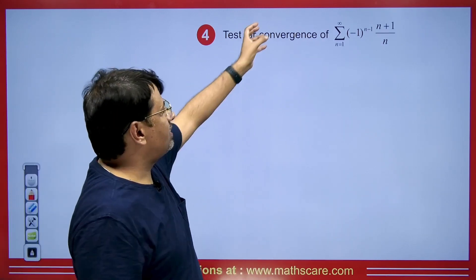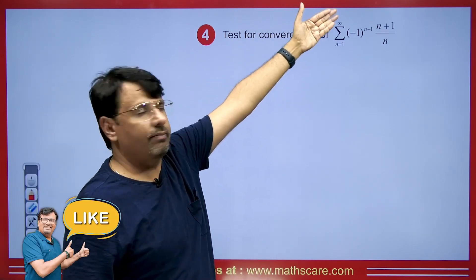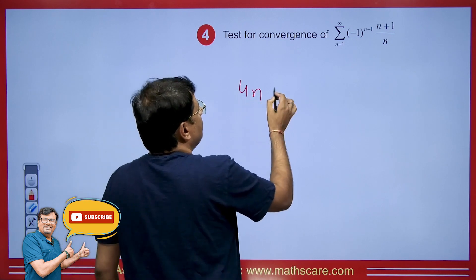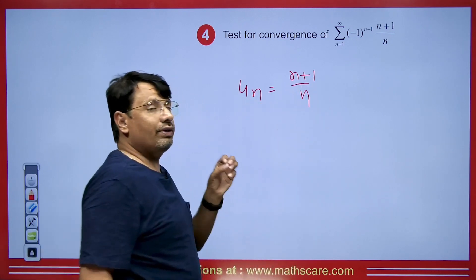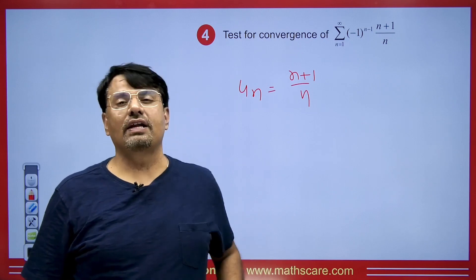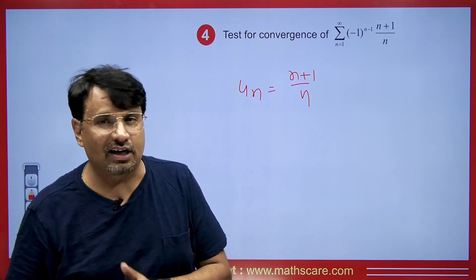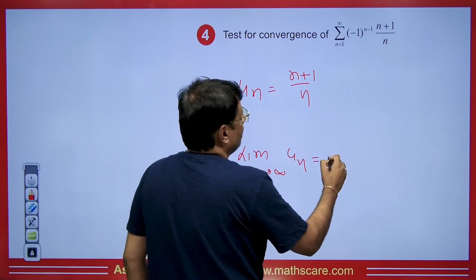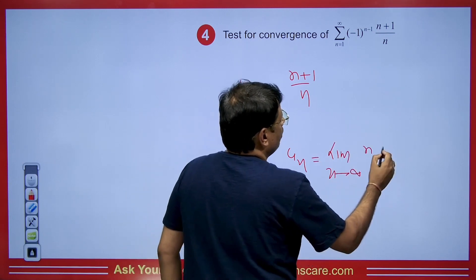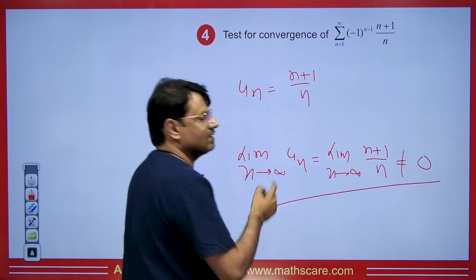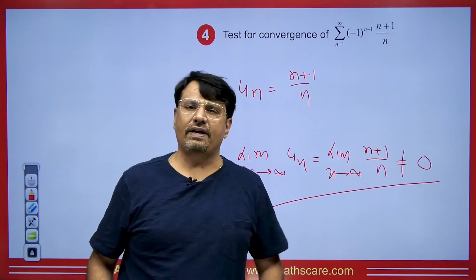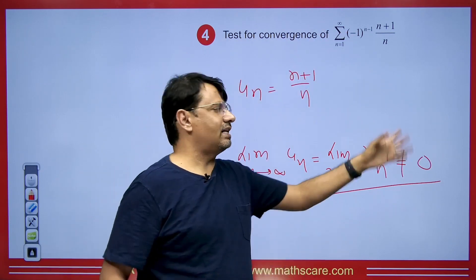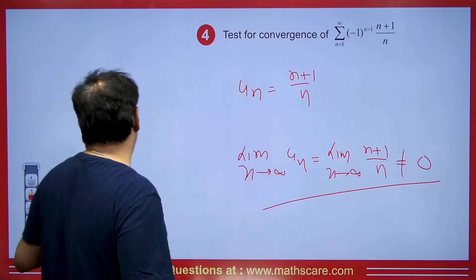Next question: summation n equals 1 to infinity of minus 1 to the power n minus 1 times (n+1) upon n — determine if this series converges. The u_n here is (n+1) upon n. We check: the limit as n tends to infinity of u_n equals limit of (n+1)/n equals 1, which is not 0. Since this condition is not satisfied, by Leibniz's theorem this given alternating series will not converge.